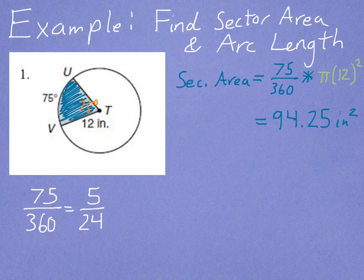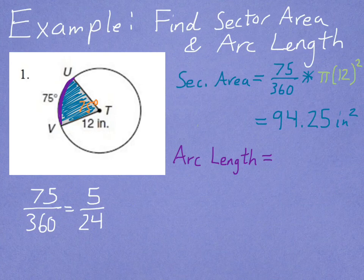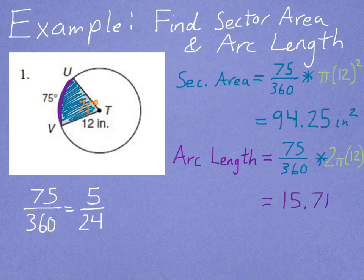For arc length — which is like the crust of the pizza — that's the same fraction times the circumference, which is 2 pi r. In this case, 2 pi times 12. Putting that in the calculator, I get 15.71 inches.